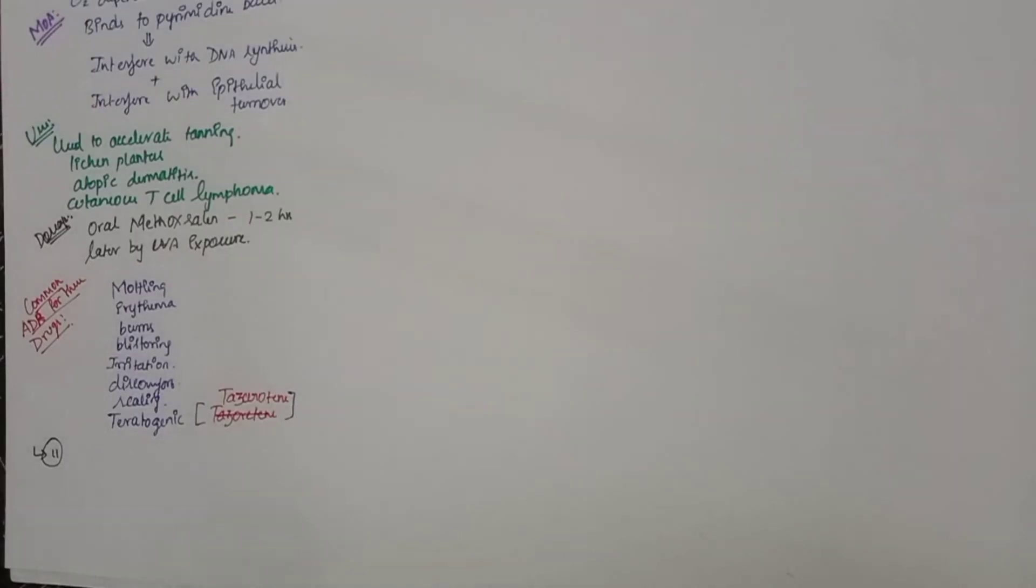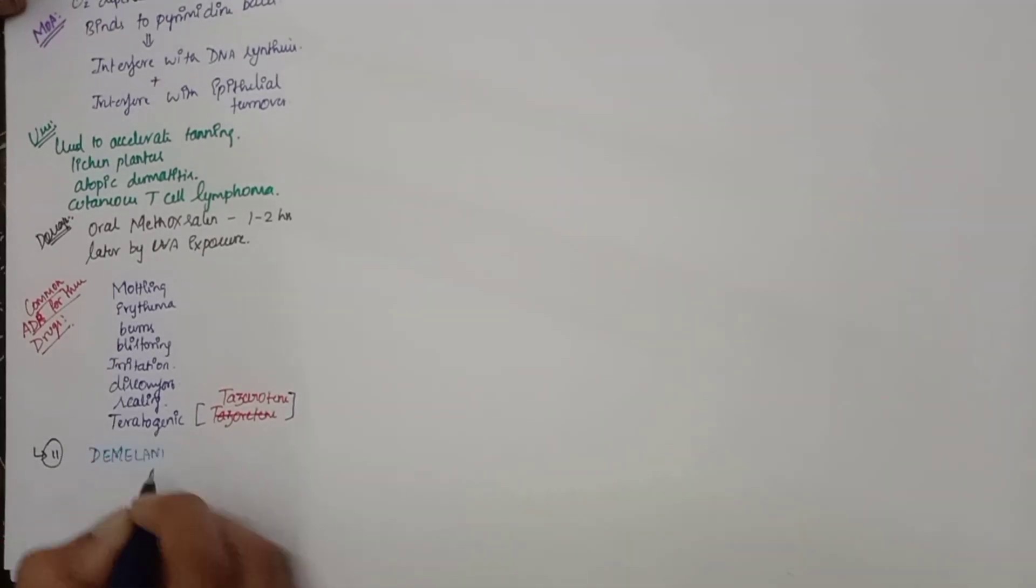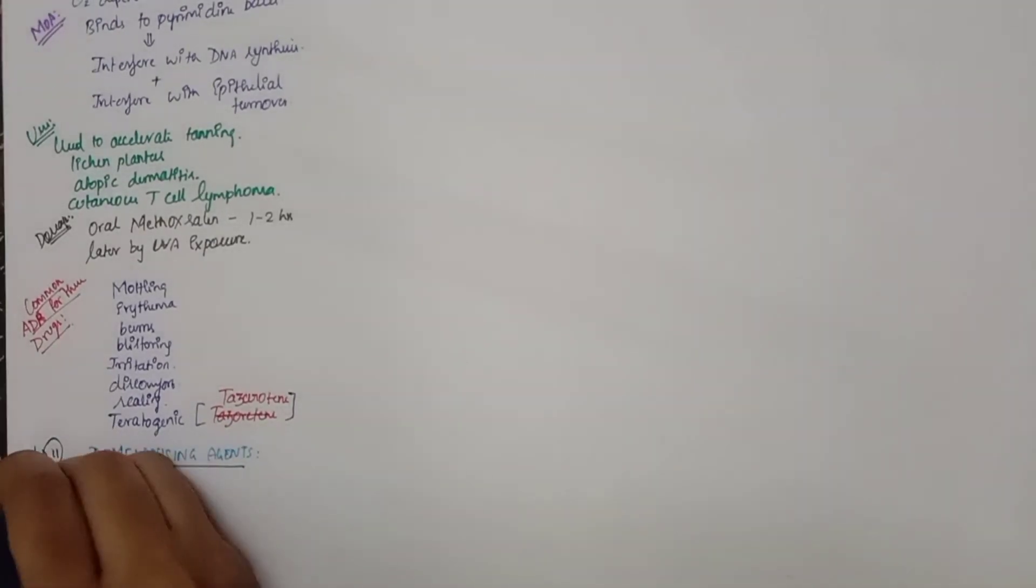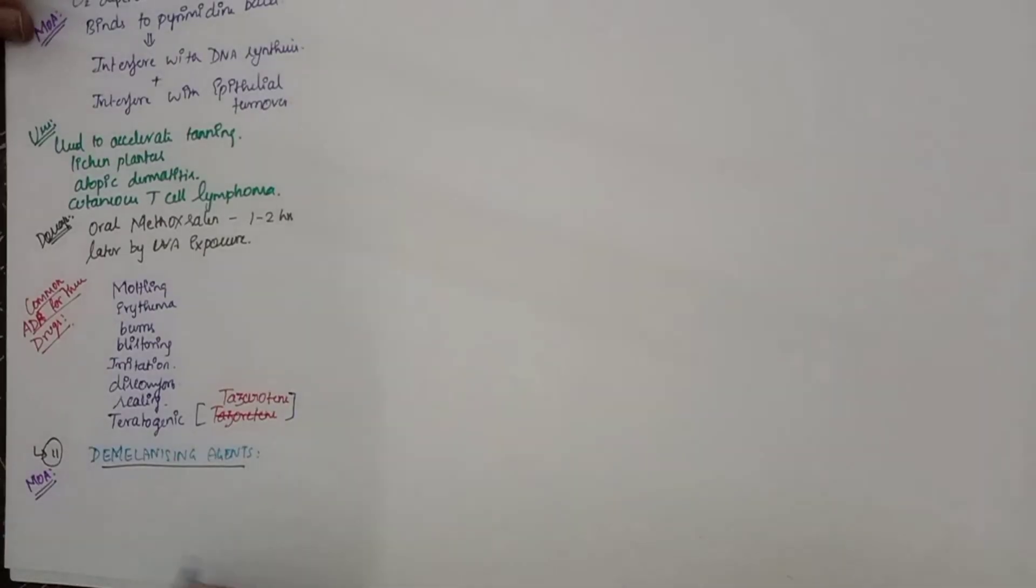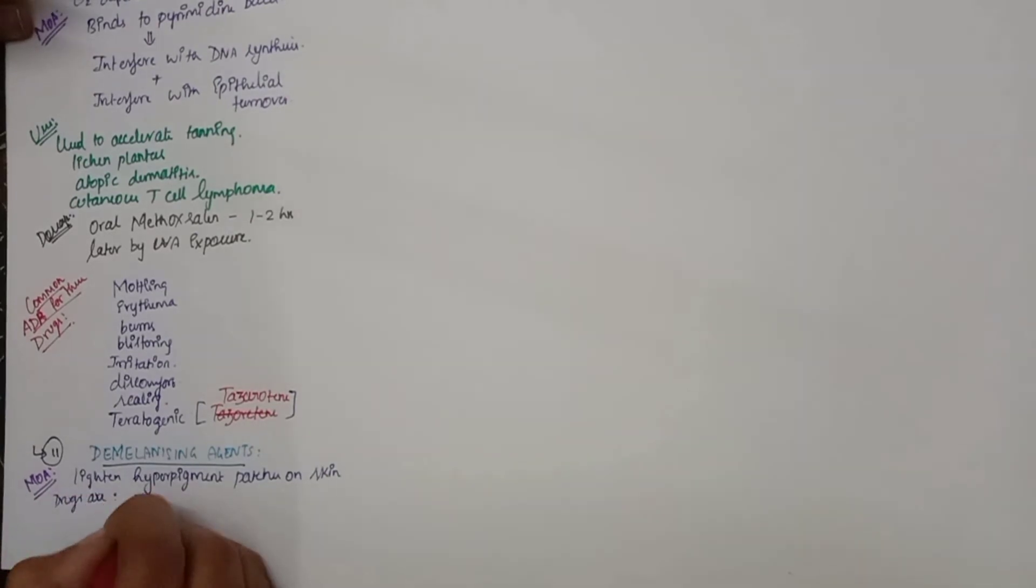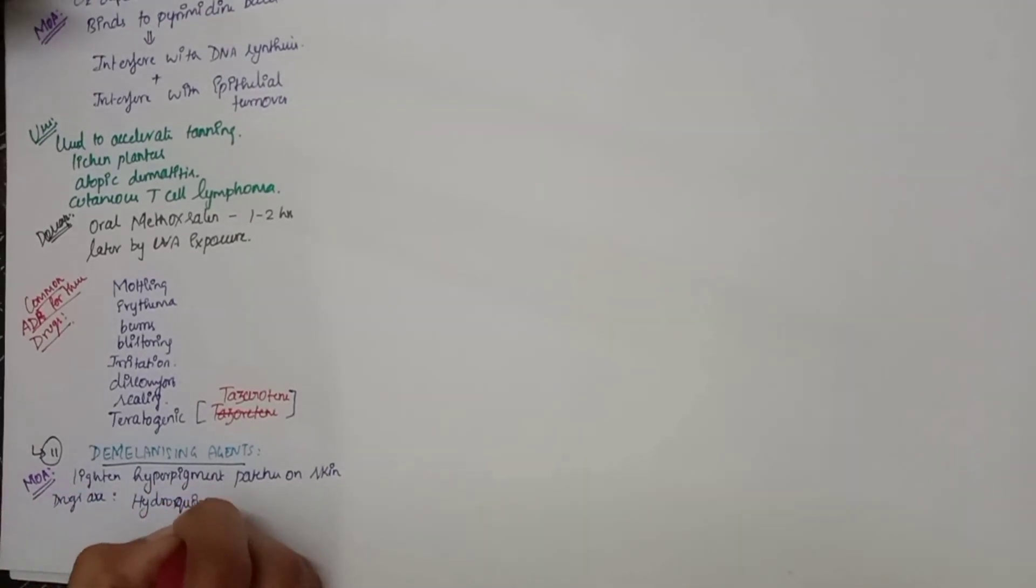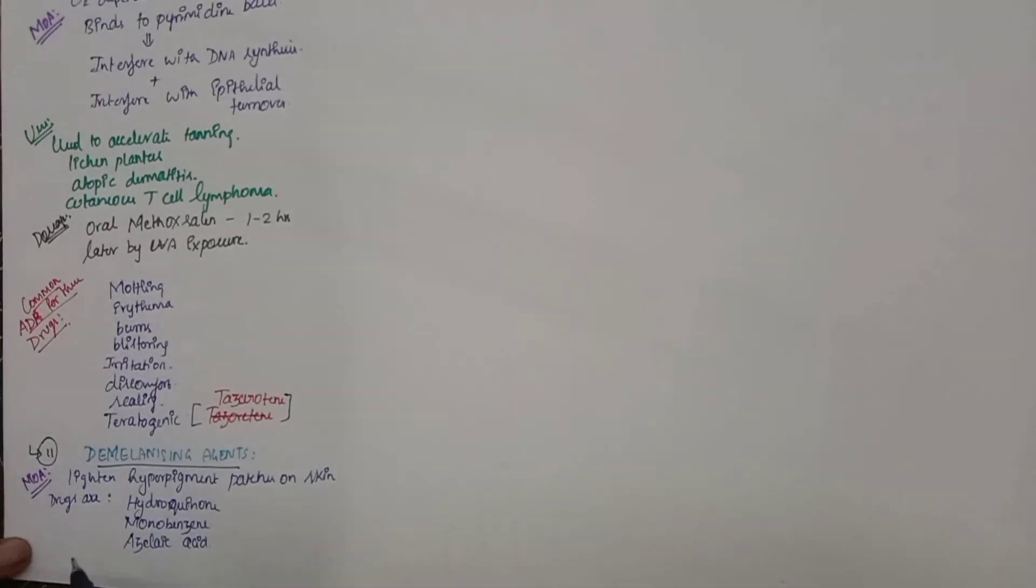And then the next group of drug is demyelonizing agents. The mechanism of action is these drugs will help in lightening of the hyperpigmented patches on the skin. The drugs are hydroquinone, monobenzine, and azelaic acid. This hydroquinone acts by inhibiting the tyrosinase enzyme and acts as a demyelonizing agent. You have to be cautious while using it because if we withdraw it immediately it will cause repigmentation of the skin.